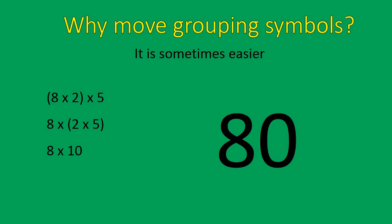The key thing to remember with the associative property is that you will have grouping symbols that you move. The grouping symbols move, but the numbers stay in the same order. Look at that: eight, two, five — eight, two, five. The numbers stay in the same order, but the grouping symbols move.